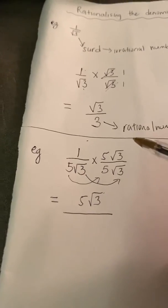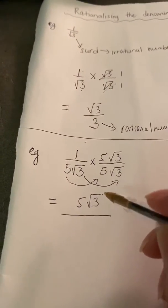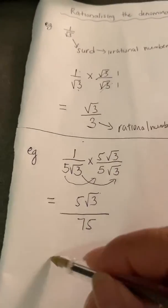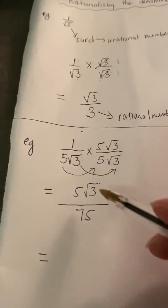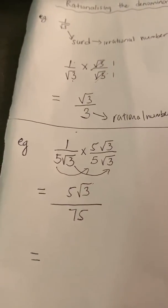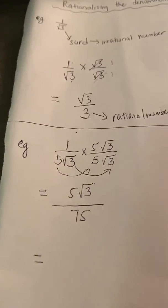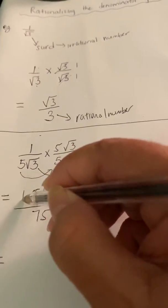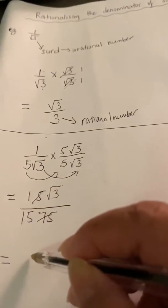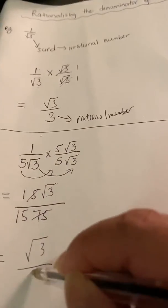And as a result, 25 times 3 will give us 75. Now, we could check if we could simplify our answer. 5 and 75 has a common factor of 5, so by cancelling 5 and 75, we would end up with root 3 on 15.